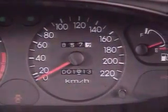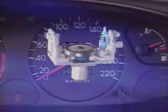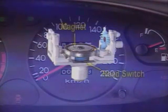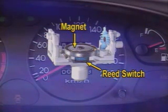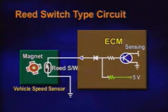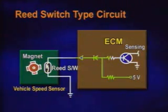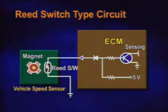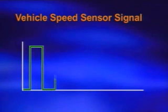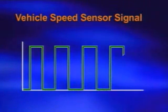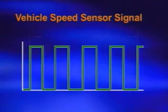In case of a compact vehicle, the reed switch type vehicle speed sensor is mainly used and located behind the cluster. The sensor consists of a magnet and reed switch, and the magnet is driven by the speedometer cable. The reed switch turns on and off by the rotation of the permanent magnet installed at the end of the speedometer cable. It turns on and off four times per rotation, and vehicle speed is calculated according to the pulse numbers per second.